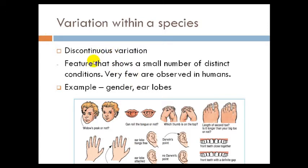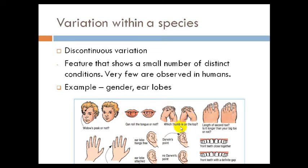Discontinuous variation involves features that show a small number of distinct conditions, with very few or no intermediates observed. Examples include gender and earlobes. Other examples include the hairline pattern on the forehead — whether it is curved or straight — the ability to roll the tongue, and when you clasp your hands together, which thumb ends up on top, left or right.